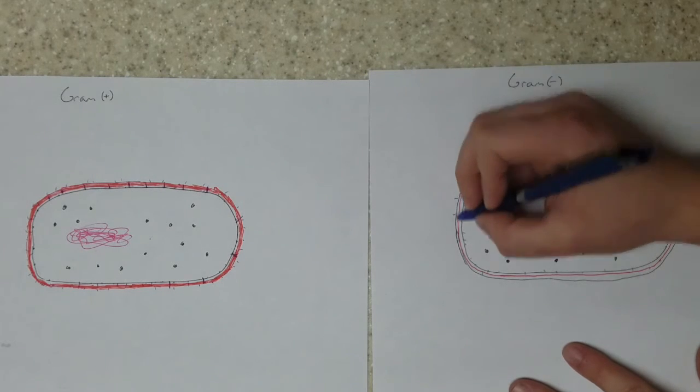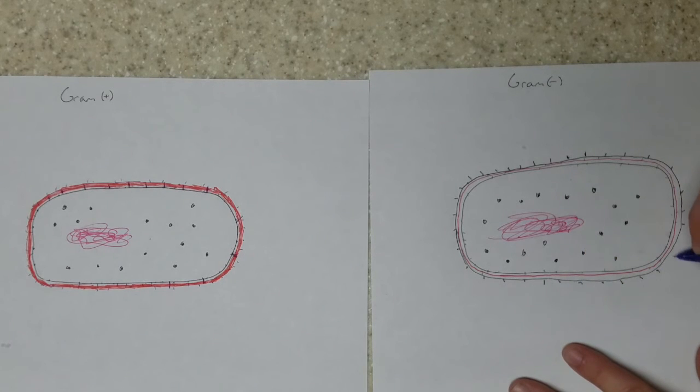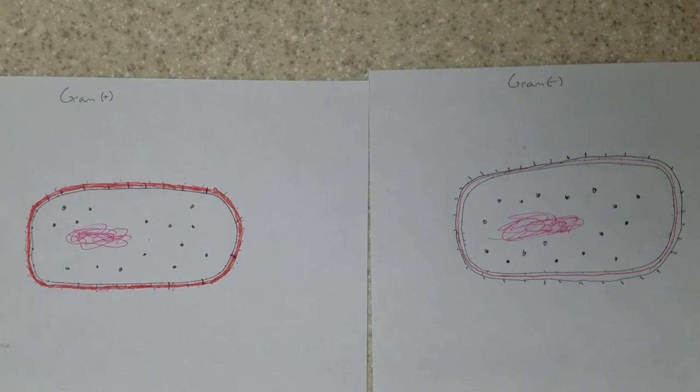And they're all around the cell, and they poke out. They're definitely found on E. coli. So a difference that only gram-negative cells have compared to gram-positive.